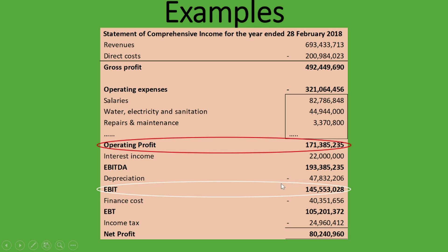So you can see earnings before interest and tax. What is the difference between EBIT and net profit? The only things in between are your finance cost — which is another word for interest expense — as well as income tax. So it's called earnings before interest, which is the finance cost, and tax, which is the income tax expense. That is how you arrive at the net profit. EBIT has only left out the finance cost and the income tax before arriving at net profit.